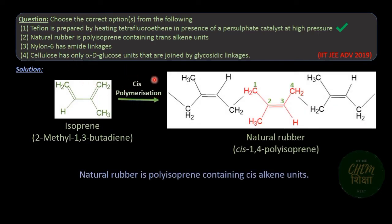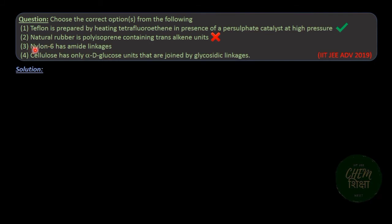Option two is about natural rubber. It is made by the cis polymerization of isoprene, that is 2-methyl-1,3-butadiene, and is known as cis-1,4 polyisoprene. By cis polymerization, we mean that if we consider a single unit of monomer, the other two monomer units are attached at the cis position, that is at the 1 and 4 position of the monomer unit. Hence, option two — that natural rubber is polyisoprene containing trans alkene units — is incorrect.